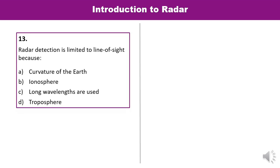Question 13: Radar detection is limited to line of sight. Why? Options: curvature of earth, ionosphere, long wavelengths, or troposphere. Radar detection is limited to line of sight because of the curvature of the earth. That is the correct answer.